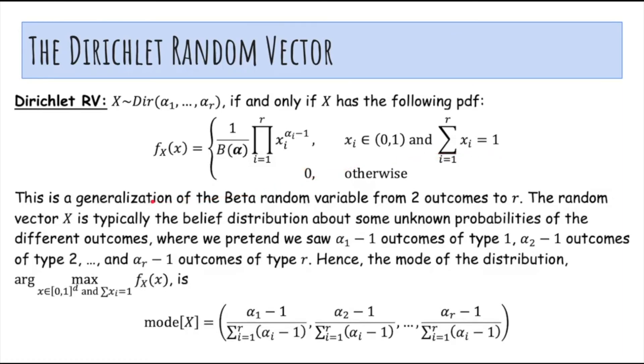And this is a generalization of the beta random variable from two outcomes to r, and the random vector is typically the belief distribution over some unknown probabilities of different outcomes, where we pretend we saw alpha 1 minus 1 outcomes of type 1, alpha 2 minus 1 outcomes of type 2, and so on. And the mode of the distribution is just the vector of the fractions of the number of times each outcome occurred. Thank you.